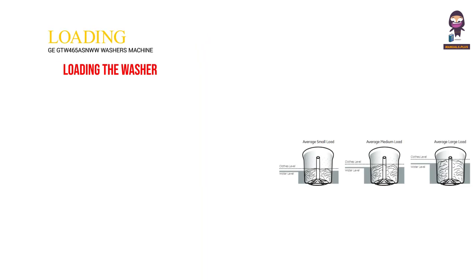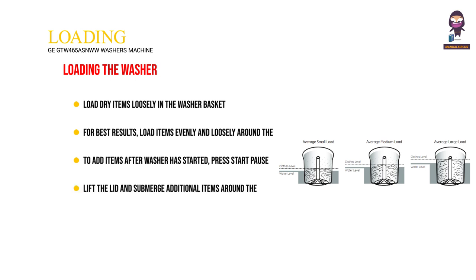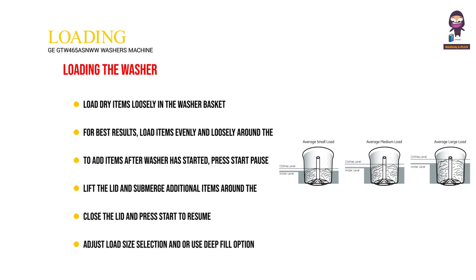Loading the washer: Load dry items loosely in the washer basket. For best results, load items evenly and loosely around the outside of the basket, filling in towards the center on larger loads. To add items after the washer has started, press Start/Pause. If the lid is locked, wait until the lid lock indicator on the display is no longer illuminated before attempting to open the lid. Lift the lid and submerge additional items around the outside of the basket. Close the lid and press Start to resume. Adjust load size selection and/or use the Deep Fill option if necessary.